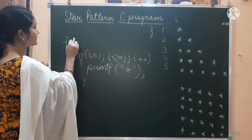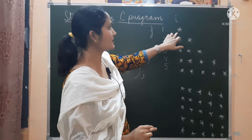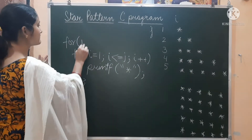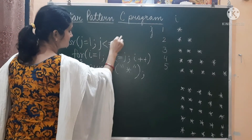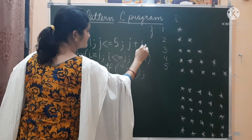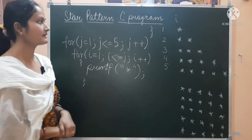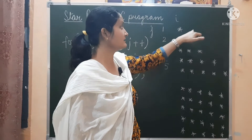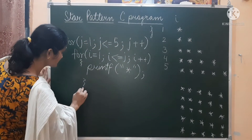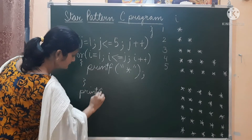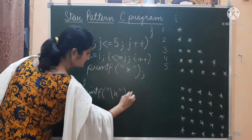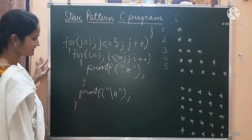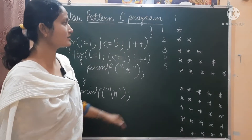Now the outer for loop is the same. J is going from 1 till 5 — it has to print 5 lines — so the value of J will go from 1 till 5 and J plus plus. To go to the next line we use the escape sequence: printf backslash n, and the entire code will come underneath it. So this was the logic for this program.